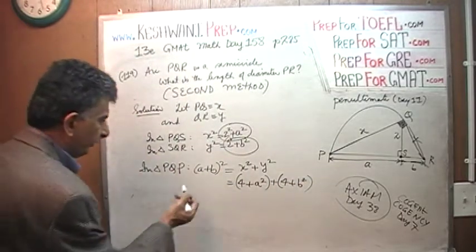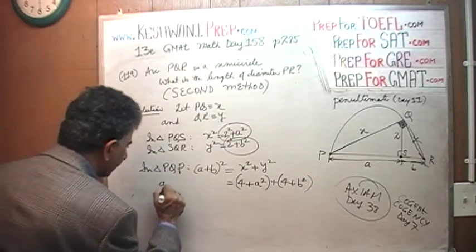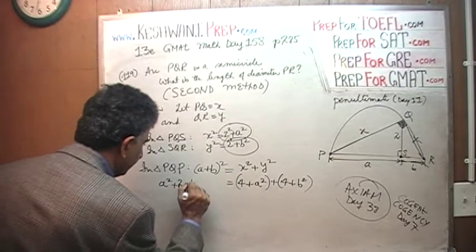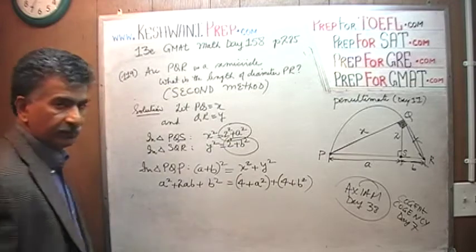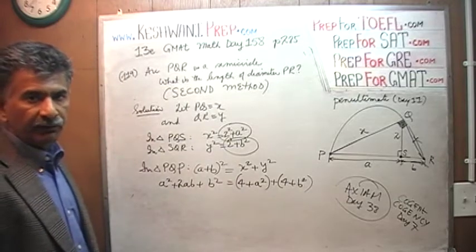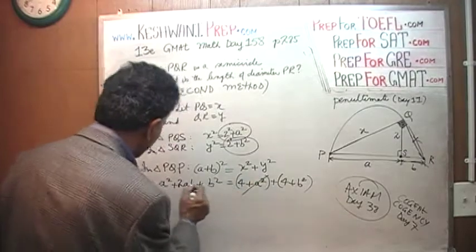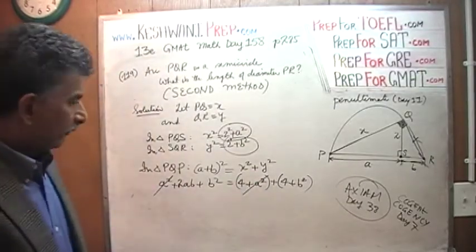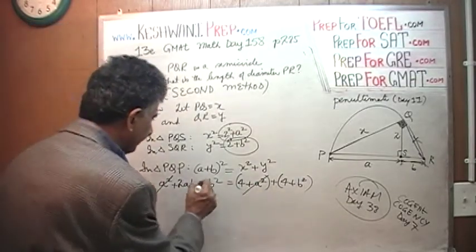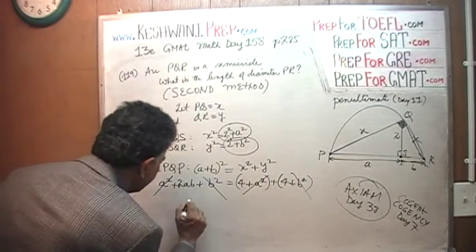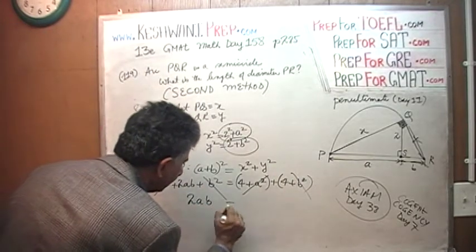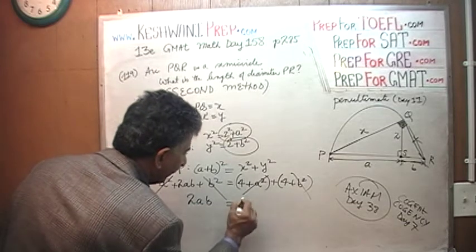When you open this parenthesis, we get A squared plus 2AB plus B squared. We have A squared on both sides of the equation. If you subtract A squared from both sides, A squared would drop out. Similarly, if you subtract B squared from both sides, B squared would drop out. And we are left with 2AB. 2 times A times B equals 4 plus 4 is 8.